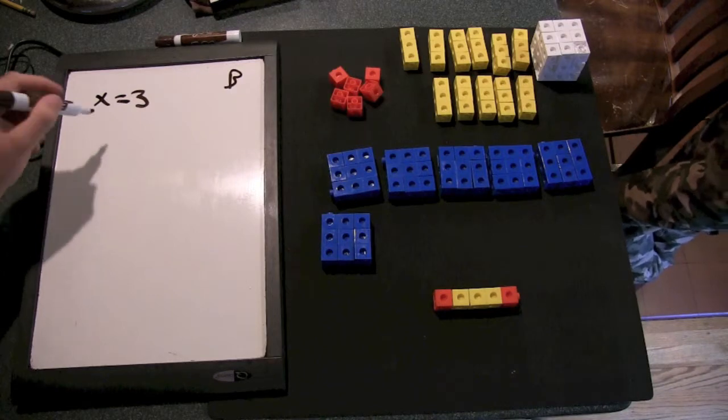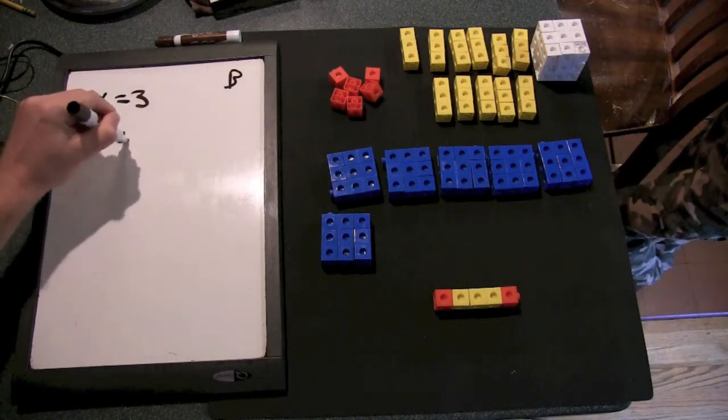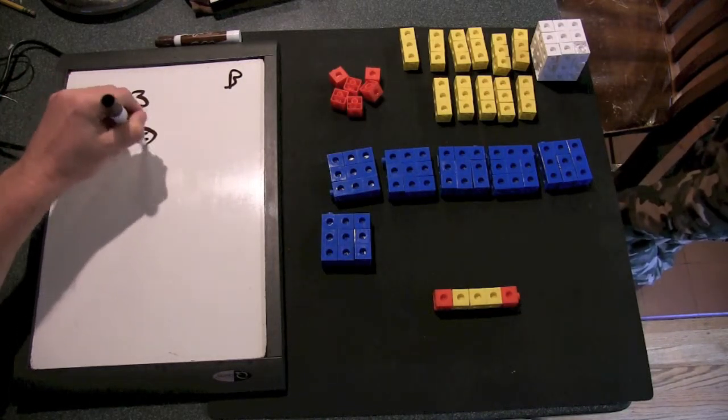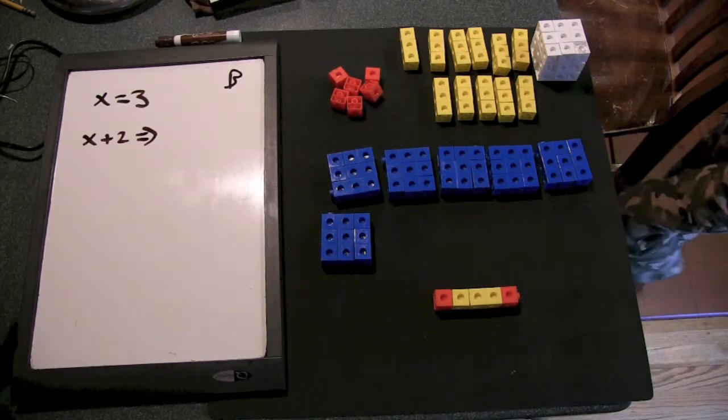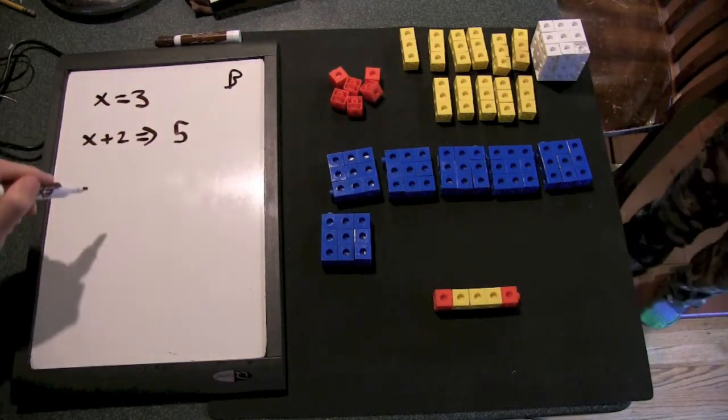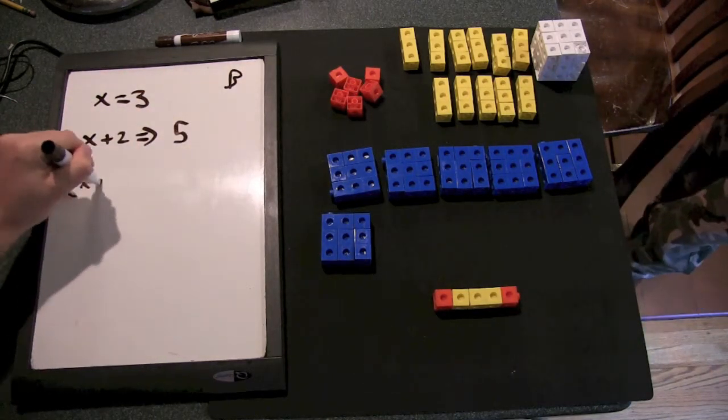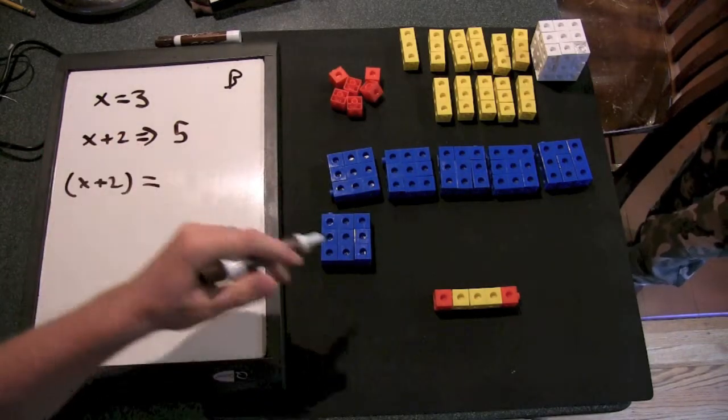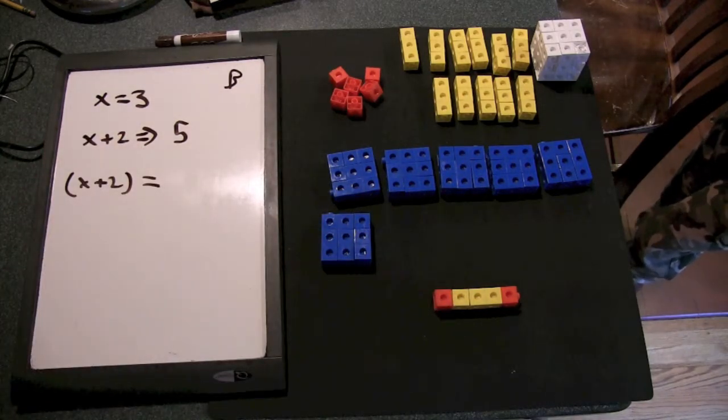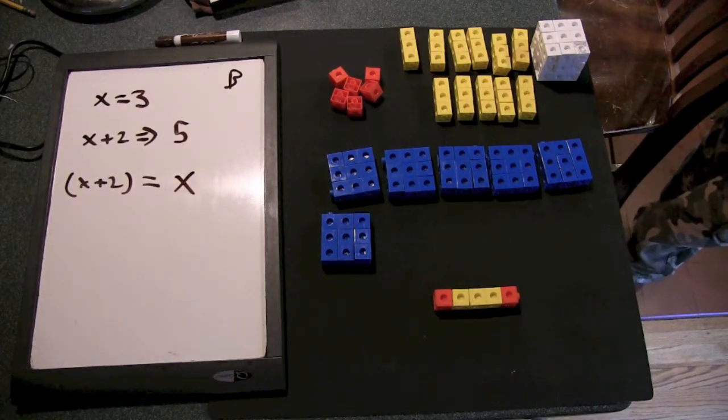Okay, so in terms of x plus 2, if x was 3, that meant x plus 2 was going to be what? 5. And from our picture here, we see that x plus 2, which is this figure, equals x. How does it relate to x?